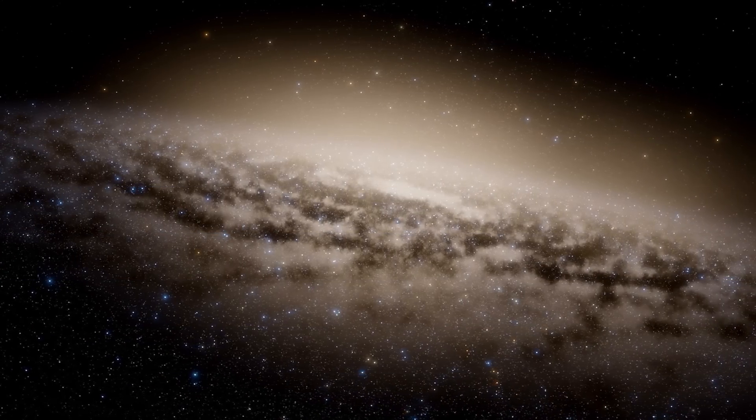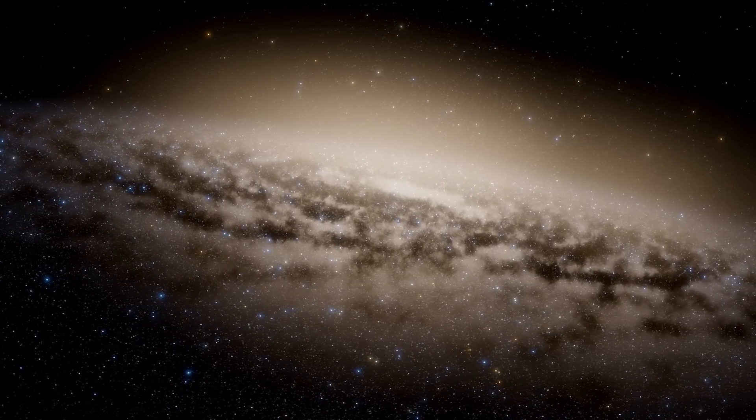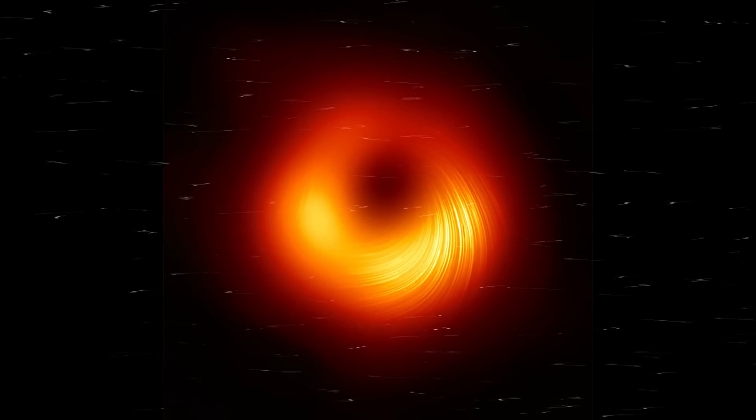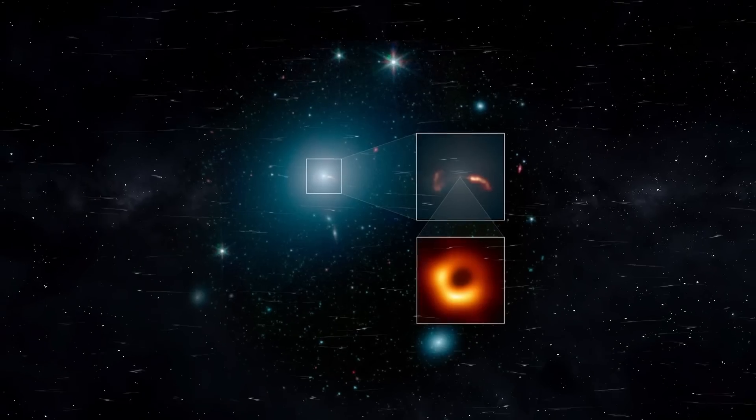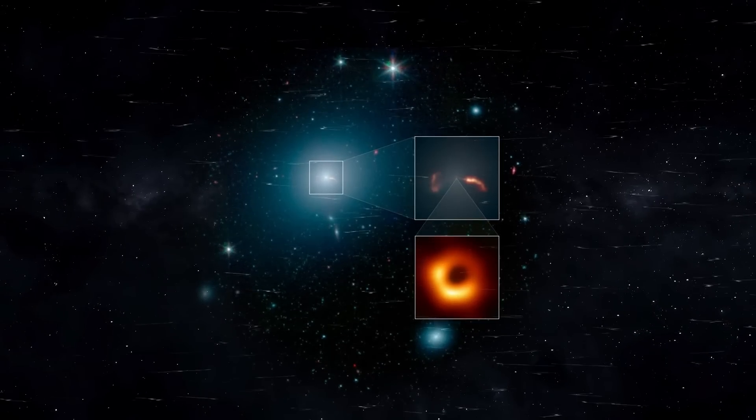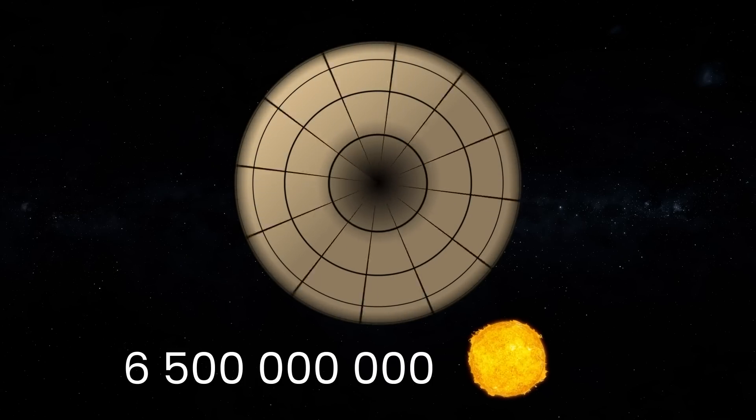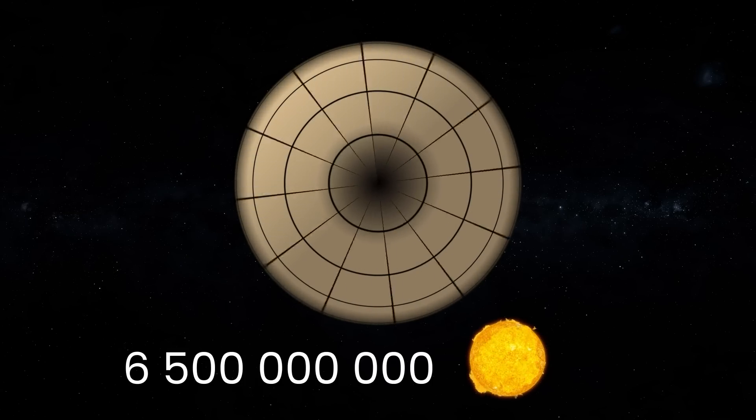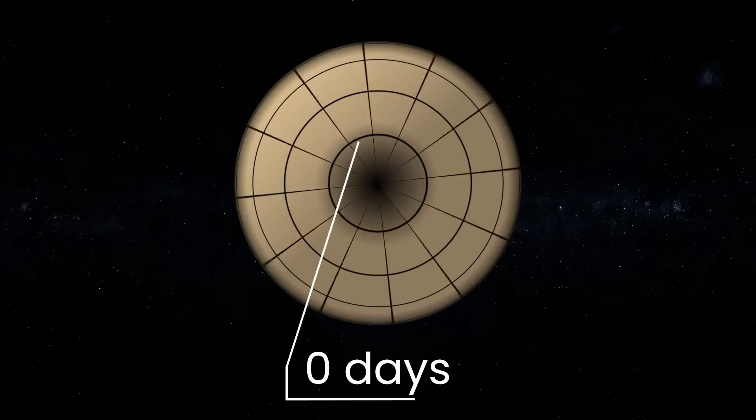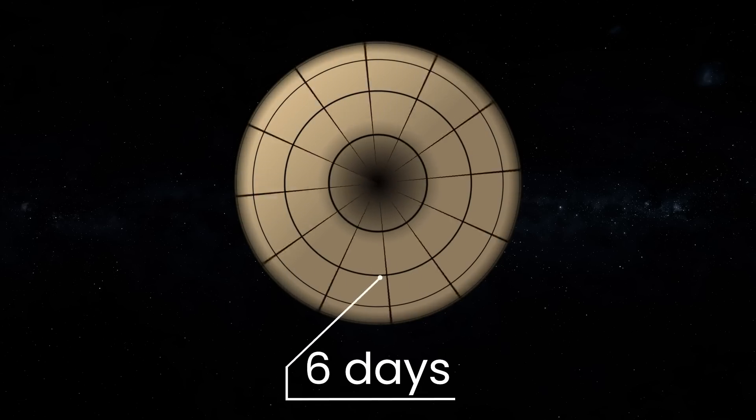But this was just the beginning of the hunt for Sagittarius A-star. To understand all the complications, let's go back to the black hole from the M87 galaxy. The mass of the giant is 6.5 billion solar masses. The accretion disk makes a rotation around its center with a span of several days or weeks.